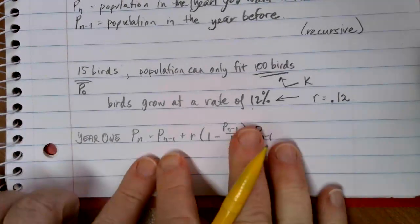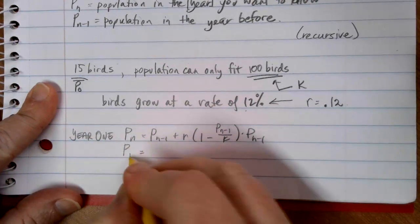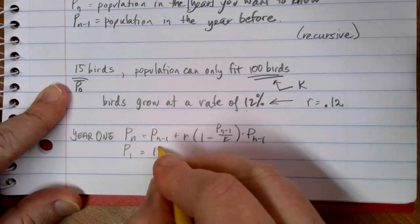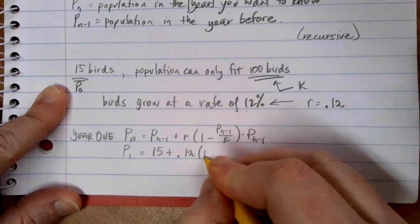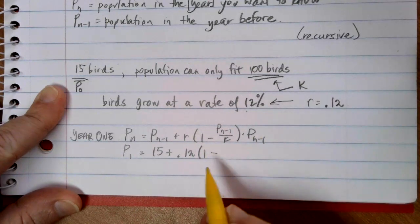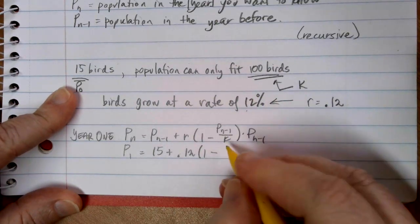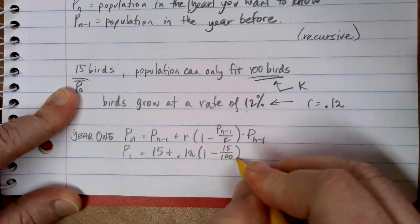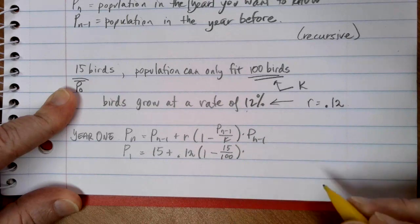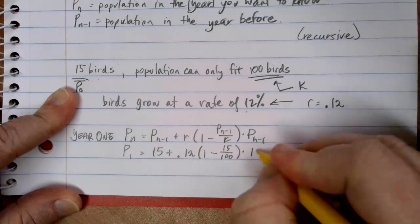Let's put in what we know. The starting population of birds is 15. So in year one, I'm going to have 15 birds plus a 12% growth rate times by 1 minus. And remember, this is a minus in this formula. Before, we've always had 1 pluses everywhere. So do be careful for that. It's going to be 1 minus my year one population. So that 15 number goes in again, divided by K, which is 100. And then this is going to be timesed by P of N minus 1. So we're using that starting population of 15 birds again.